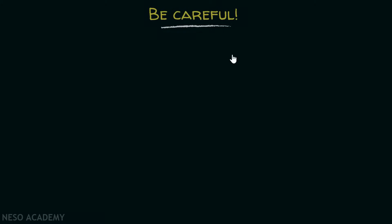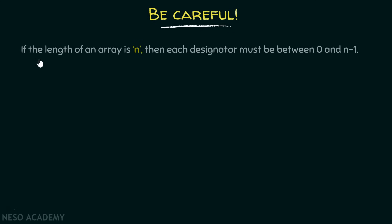Now, be careful that if the length of an array is n, then each designator must be between 0 and n-1. This is quite obvious. That if length is n, then index as we know goes from 0 to n-1. The maximum index possible is n-1 and the minimum index possible is 0. And designator is also an index.